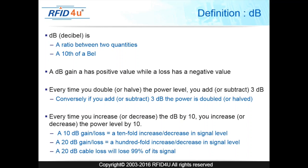The decibel is a ratio between two quantities: the power out divided by the power in. It's a tenth of a bel — that's what the 'd' stands for — and the bel is the unit of measure defined by Alexander Graham Bell, which is why it's capitalized. A dB gain has a positive value while a loss has a negative value. A simple way to work with decibels: every time you double or halve the power level, you add or subtract 3 dB. Conversely, if you add or subtract 10 dB, you increase or decrease the power level by 10.